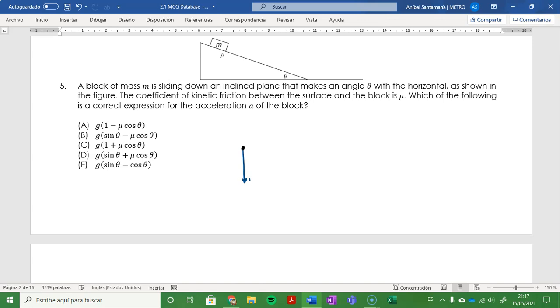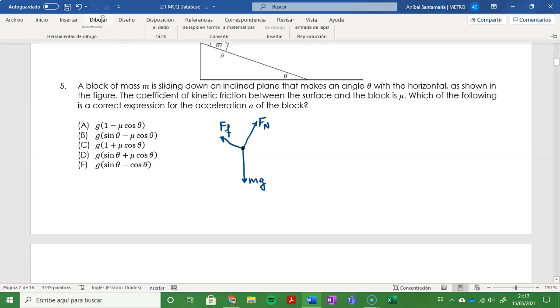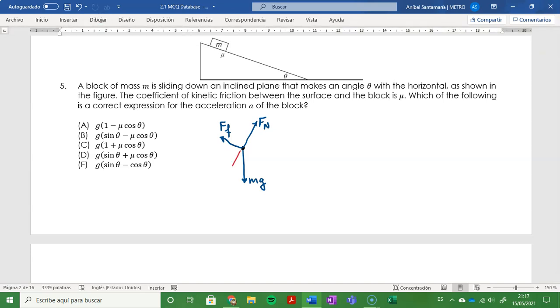The gravitational force mg which is going directly down, the normal force Fn which is perpendicular to the surface, and the friction force Ff parallel to the surface and therefore perpendicular to Fn. Now we also know that the angle of inclination of the plane is the same angle as the one between the weight and the y direction.